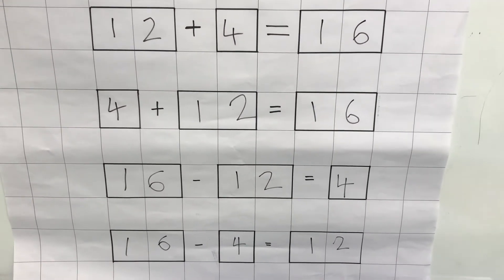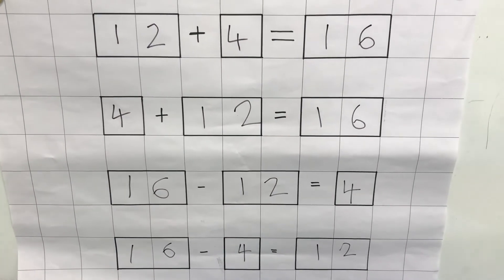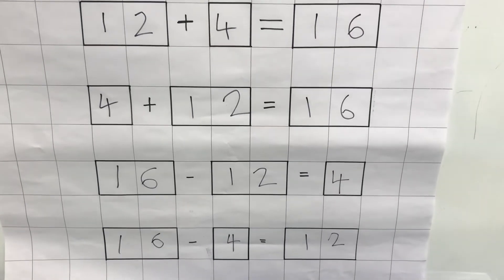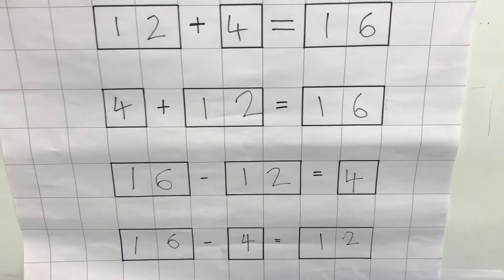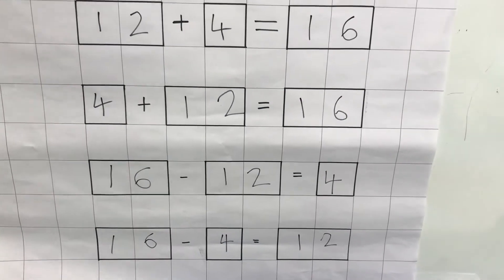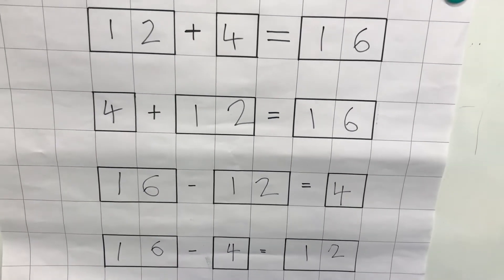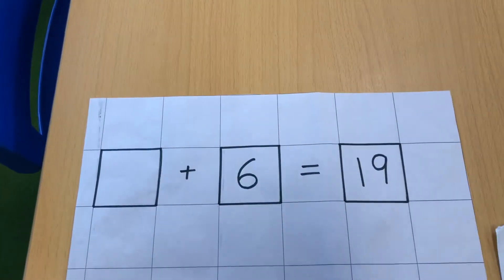12 add 4 is 16. 4 add 12 is 16. 16 take away 12 is the same as 4. 16 take away 4 is the same as 12. And I can use knowledge of fact families to help me answer questions like these.